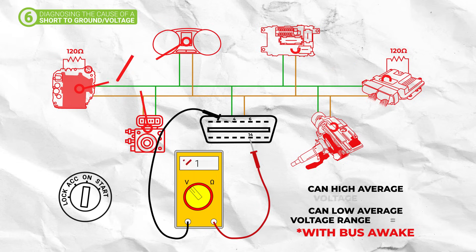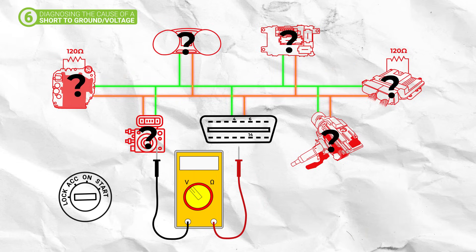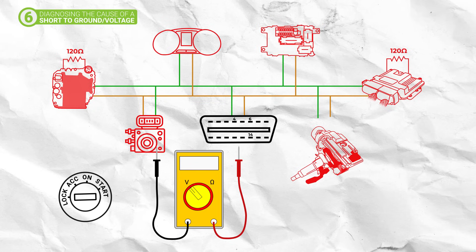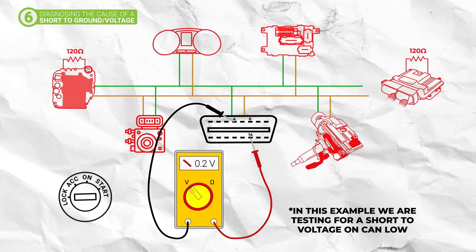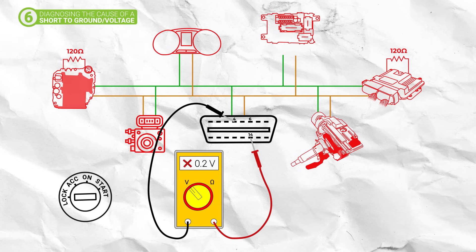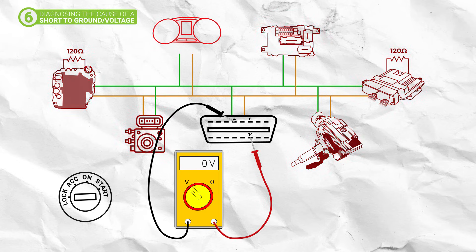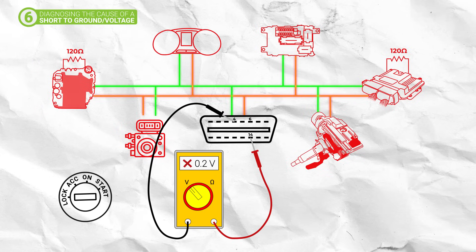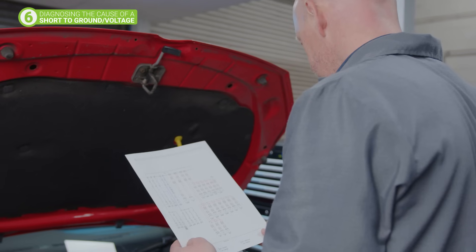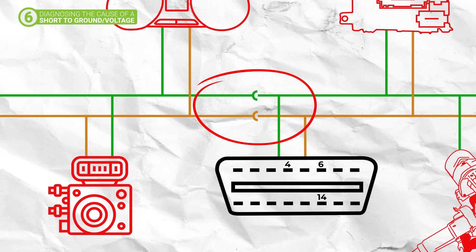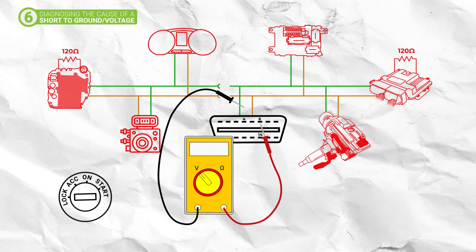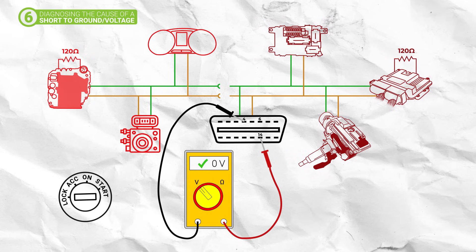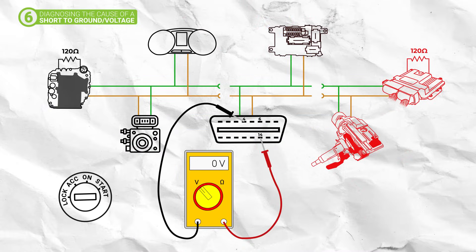To determine where a short could lie in the circuit, we need to know if the fault lies within one of the modules or the wiring. Start by disconnecting a module with CAN bus communication faults present, then conduct the same test which gave you a bad reading at the OBD2 port. Repeat this for each module with communication faults — if the reading stays the same, reconnect the module and move on to the next one. If the reading disappears, then you have identified a faulty module. If you have no change in readings, then the fault lies somewhere in the CAN network's wiring loom. Use your vehicle's wiring diagram to identify harness separation points to split the circuit in half, and repeat the test at the OBD2 port until you find the location of the fault.